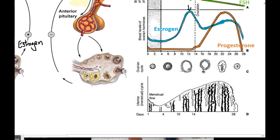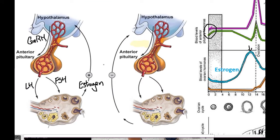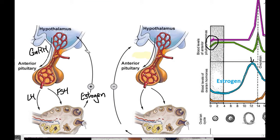Estrogen does two things. First, it travels to the endometrium and causes the lining of the uterus to thicken and new blood vessels to form — all in preparation for a potential pregnancy. The endometrium gets thicker and thicker. Second, estrogen travels back to the hypothalamus and triggers it to release more GnRH, which in turn causes the anterior pituitary gland to release more FSH and more LH. This is an example of positive feedback, because rather than shutting down its own production, it amplifies the initial effect.